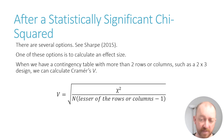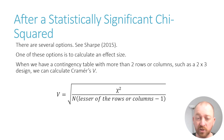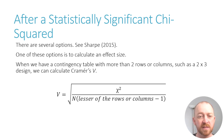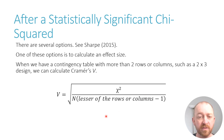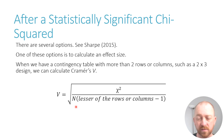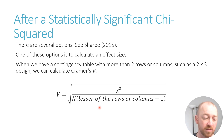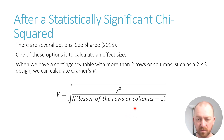Cramér's V is calculated with this equation — this is the original equation that Cramér gave us. It's usually not a problem except in certain circumstances. As you can see it's very easy to calculate: all you have to do is take the chi-square value that you obtained, divide that by the total number of observations N, and then multiply by whichever is less — the number of rows or columns minus one. So you subtract one first, then multiply by that.